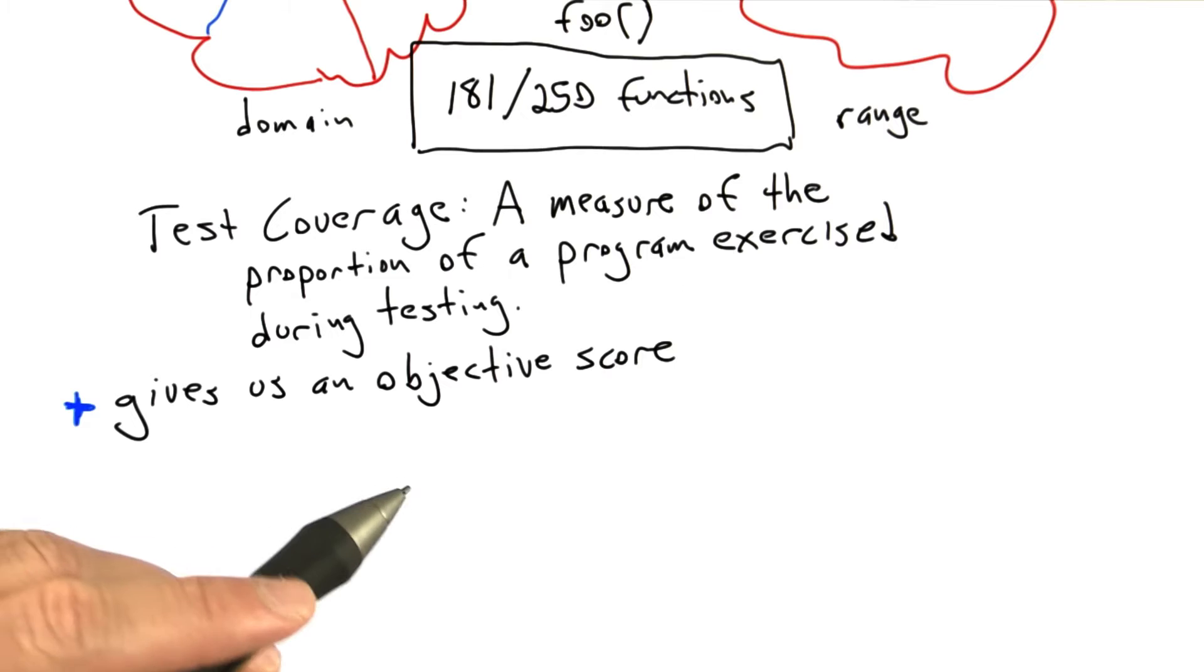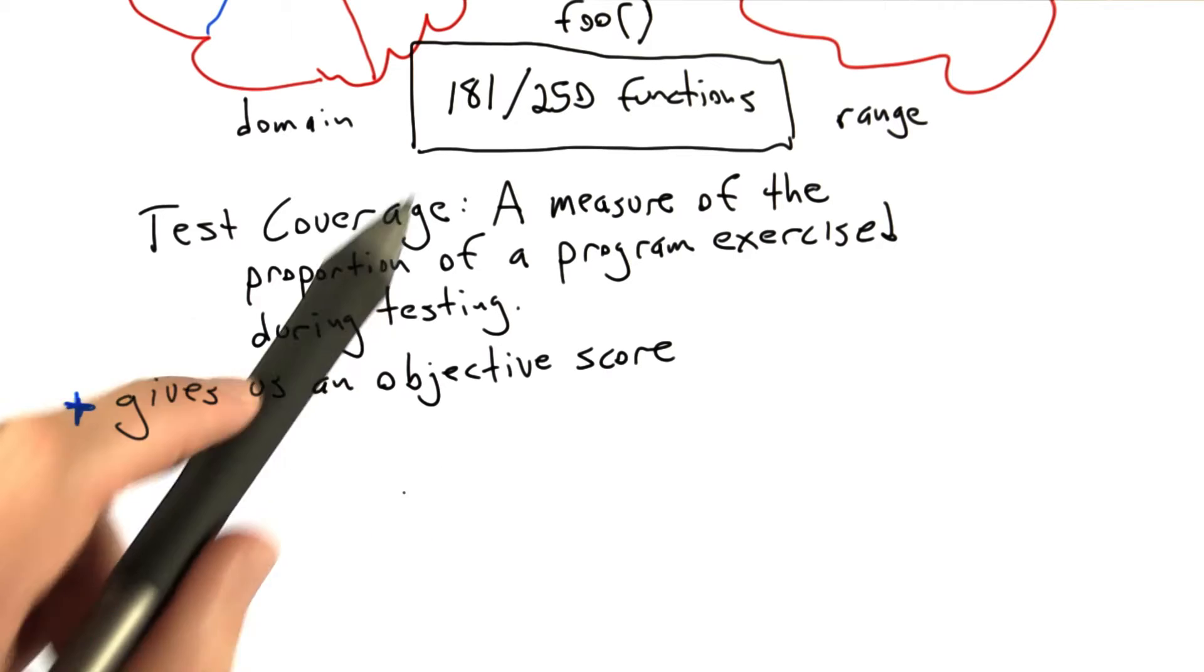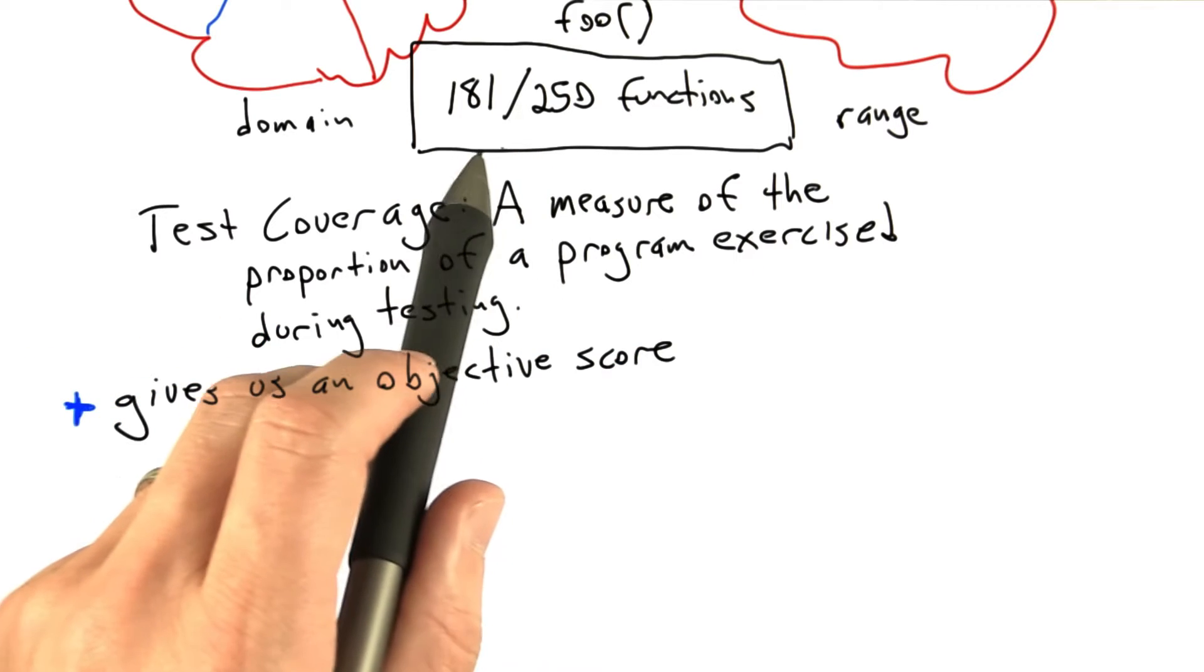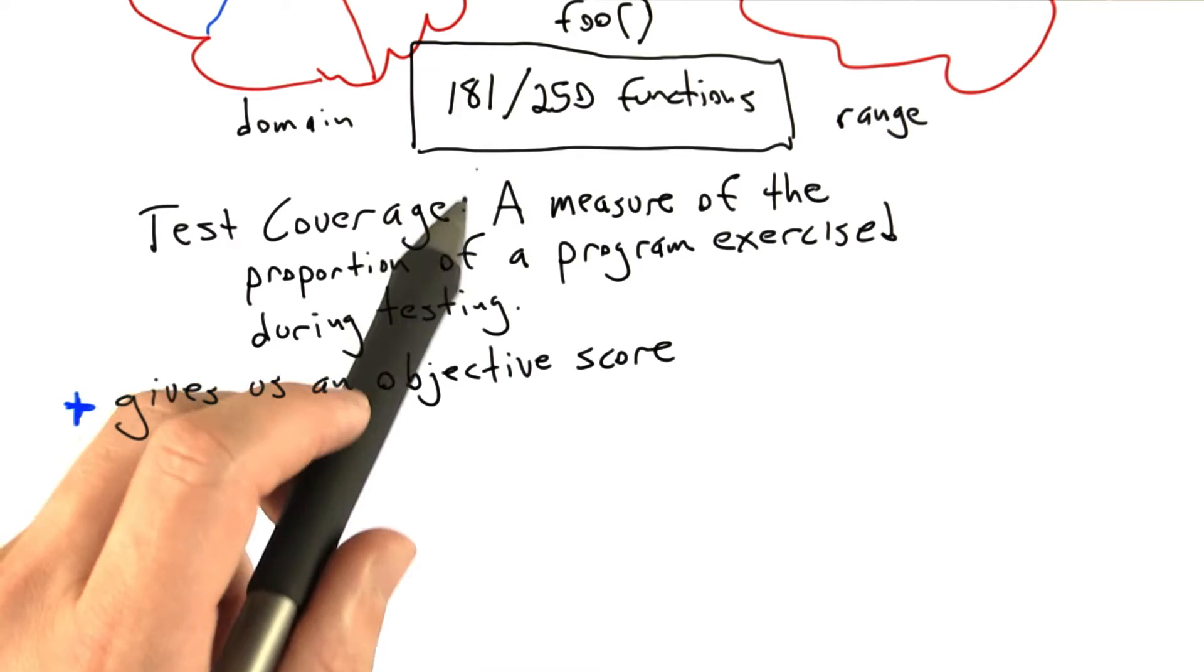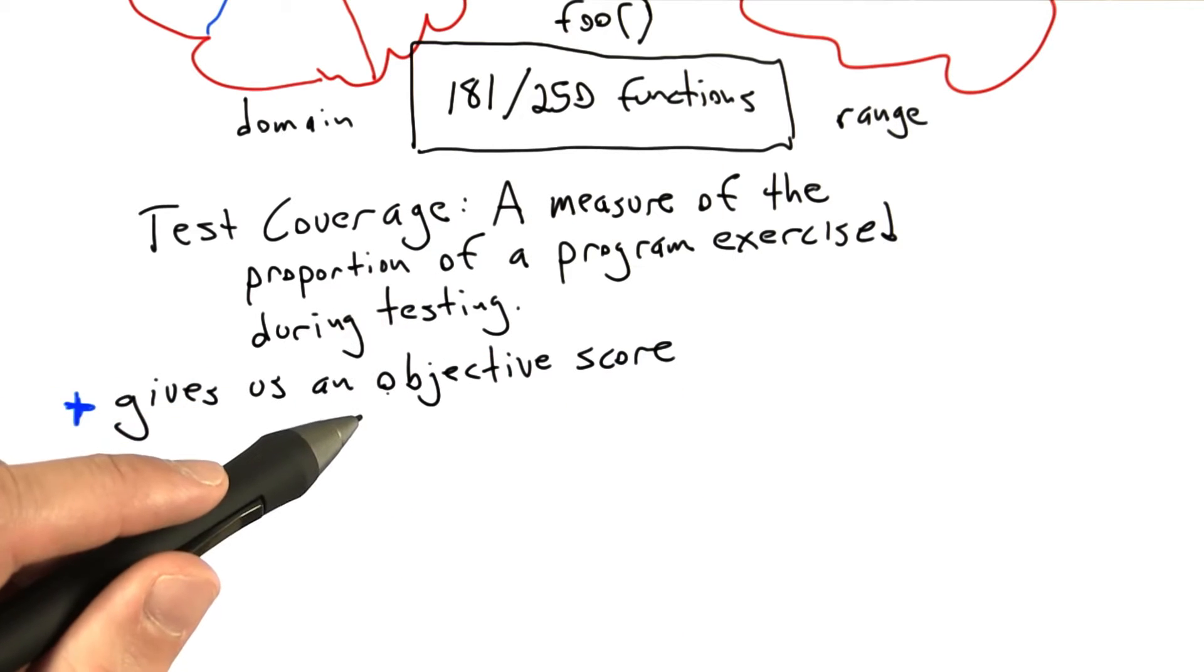Additionally, when coverage is less than 100%, as in our example where we had failed to execute all of the functions in the software under test, we know what we need to do to get full coverage.